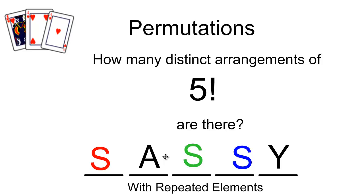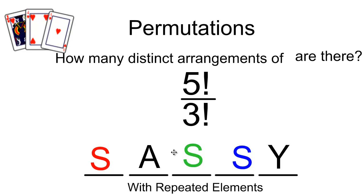So we have to correct for this number of repeated elements. For every arrangement of SASSY, if I said there were 5 factorial of them, I have to correct for the fact that repeated 3 factorial, or the number of repeated elements, don't count. And so I correct for that by taking 5 factorial and dividing out the number of arrangements that just didn't matter.